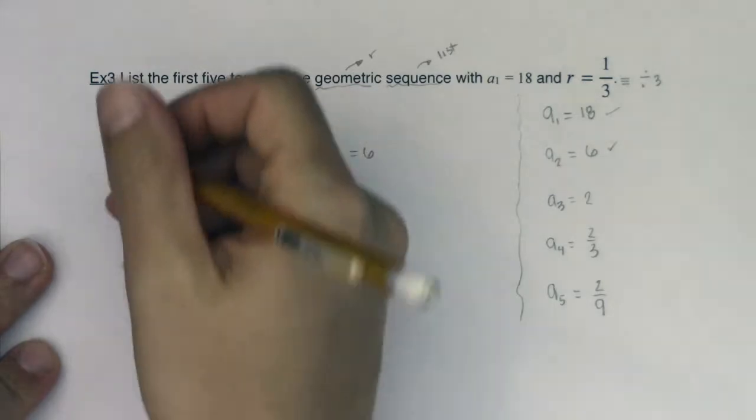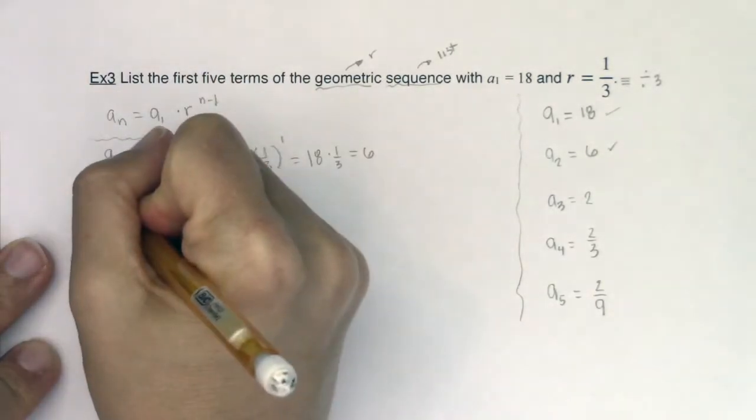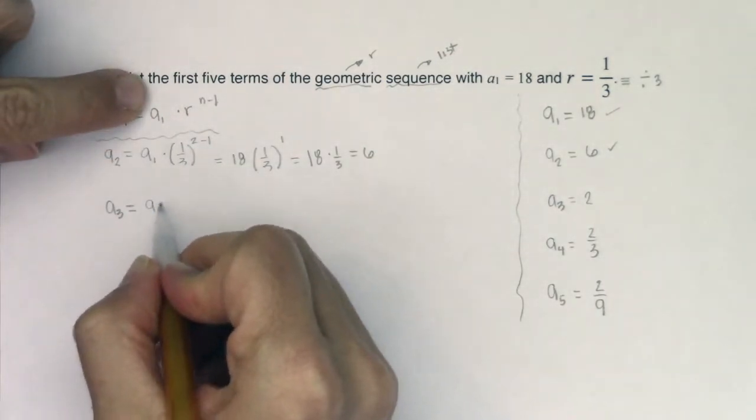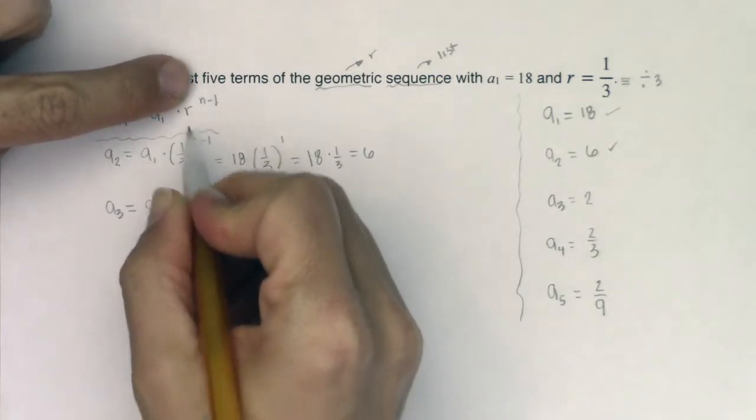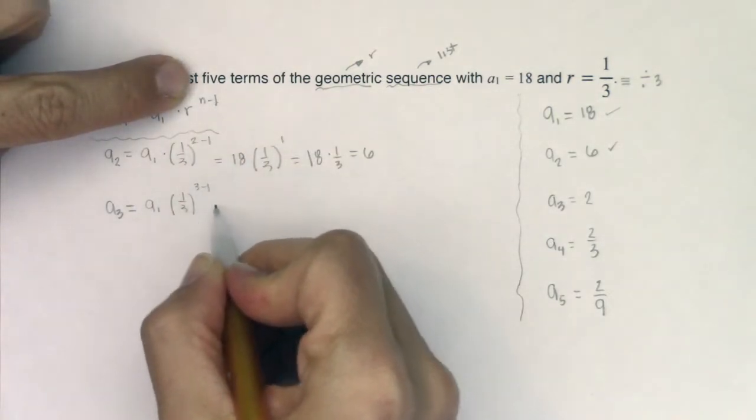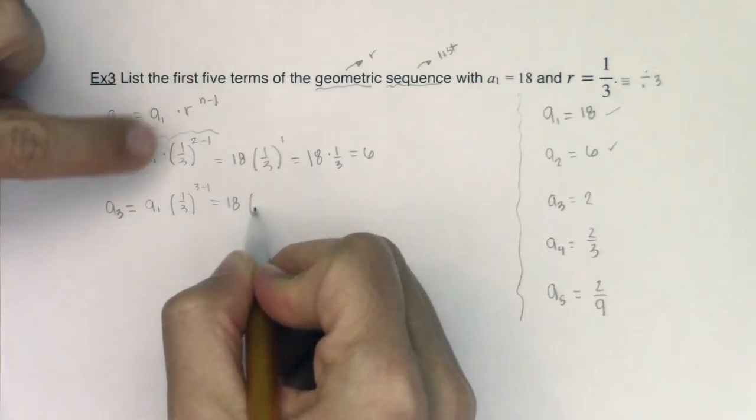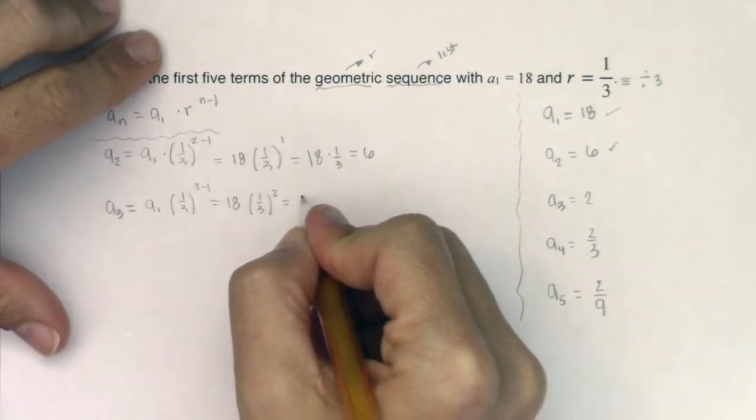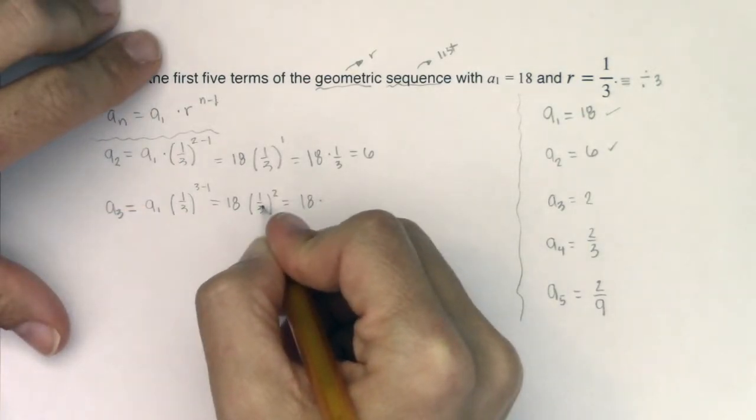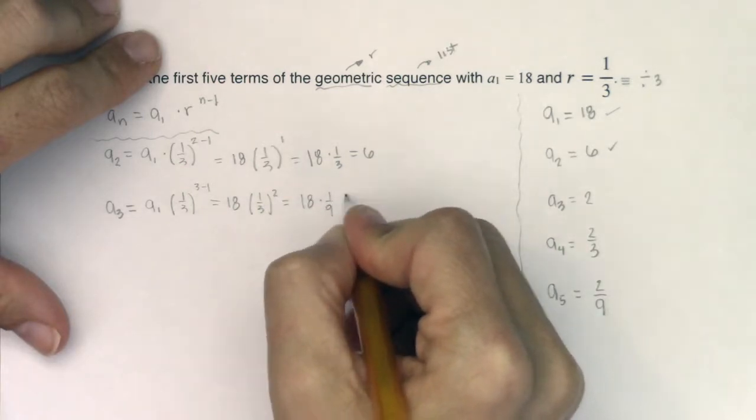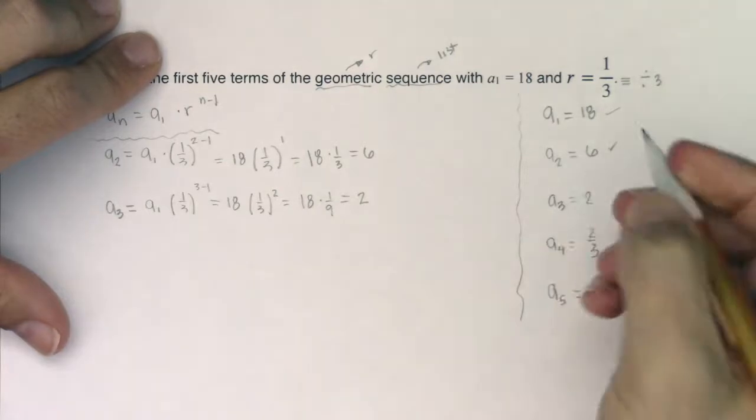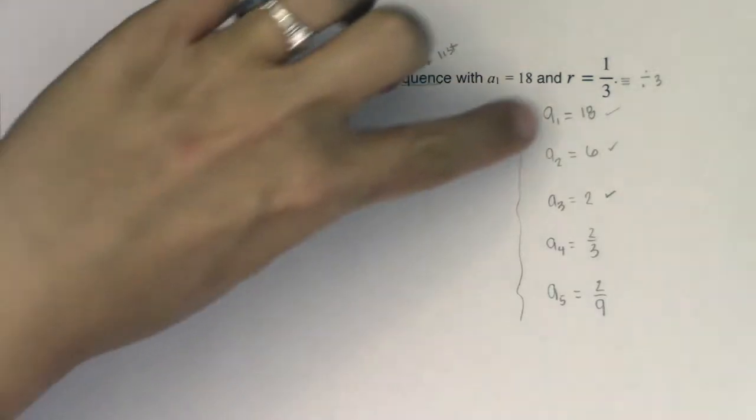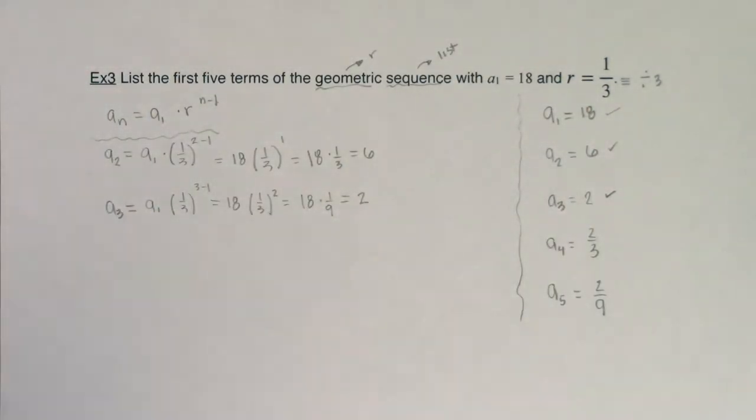Alright, let's try this now for a sub 3. So a sub 3 is equal, now n is 3 this time, right? So we got a sub 1 times 1/3 and instead of n minus 1 I'm going to write 3 minus 1. So that would be 18 times 1/3 squared. Alright, so playing this out we'd have 18, 1/3 times 1/3 is 1/9. 18 divided by 9 is 2. Okay, that's matching what we had here but I want you to see explicit formula being used and that's matching what we did when we just worked it straight off of our calculator.